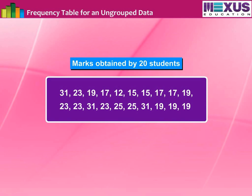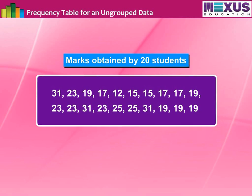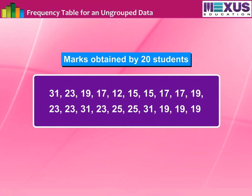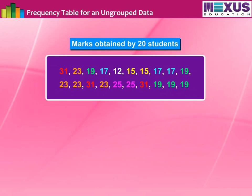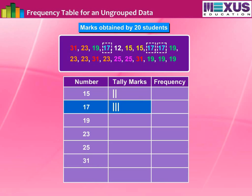Let us learn how to make a frequency table for ungrouped data. Given are the marks obtained by 20 students in mathematics. From the data we can see that 15, 17, 19, 23, 25, and 31 are repeated. Arrange these numbers each a single time under the number column, one below the other. Now read the number and put the tally mark in the tally mark column against the number. Put the tally mark in the same way till the last number.